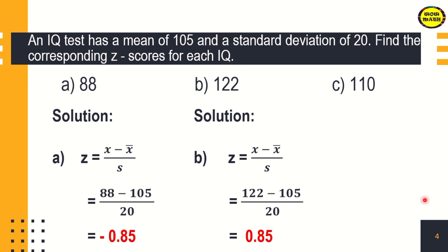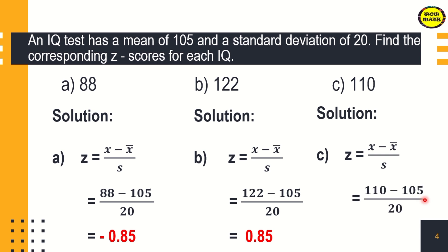Next, for a score of 110. Using the same formula, we substitute 110 for X: 110 minus 105 divided by 20. That is 0.25. Since 0.25 is a positive number, our z-score is positive. Therefore, 110 is above the mean.